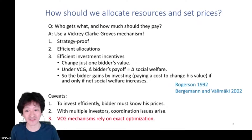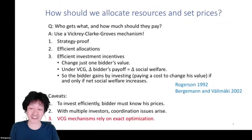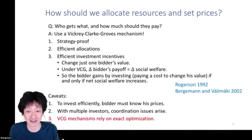Now there are some important caveats to this observation about efficient investment incentives. The first is that to be able to invest efficiently, the bidder has to know his prices. He needs to know ahead of time what price he's going to pay for the resource; otherwise he might make an investment that makes the resource more valuable, but the price turns out to be too high and he doesn't get it.